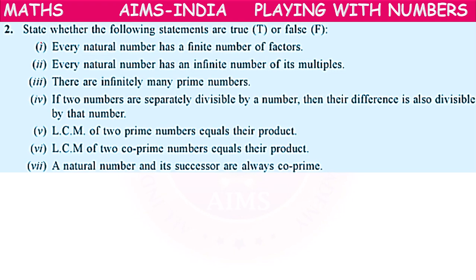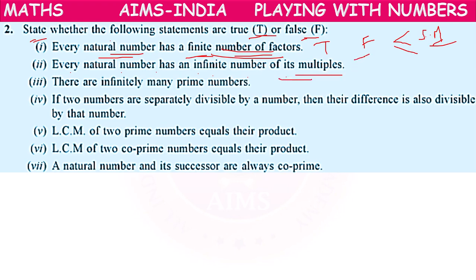State whether the following statements are true or false. First: every natural number has a finite number of factors — true, because factors of any number are less than or equal to the number itself, so they are finite. Second: every natural number has an infinite number of multiples — true, because if we keep multiplying by all natural numbers, multiples keep coming with no end. Third: there are infinitely many prime numbers — also true.